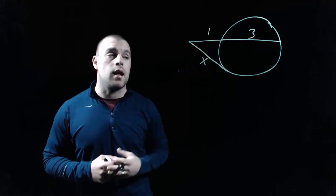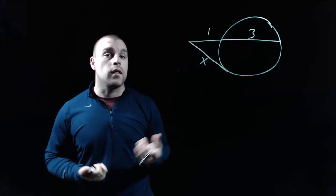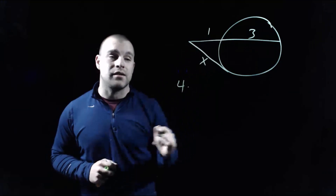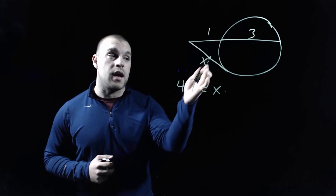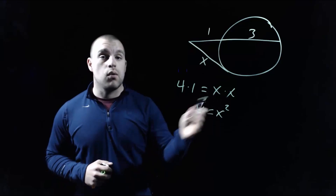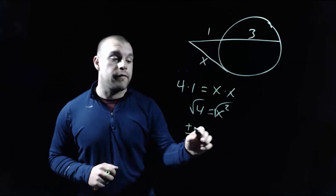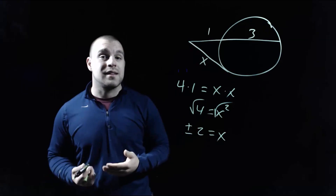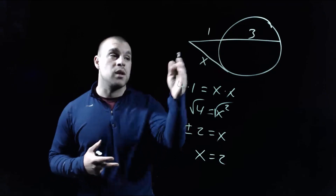This property also works if we have a secant and a tangent with a common external point. For the secant across the top, the inside piece is 3 and the outside is 1, giving a total length of 4. We multiply the whole length by the external piece: 4 times 1. For the tangent line, the whole length is X and the external portion is also X, so we multiply X times X, which gives X squared. So 4 equals X squared. To solve, we square root both sides, giving X equals plus or minus 2. But since this is the length of a segment, segments cannot have negative lengths, so the only possible answer is X equals 2.